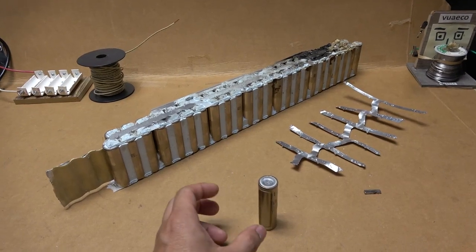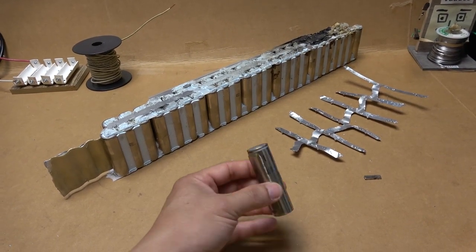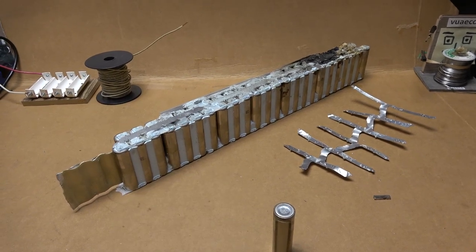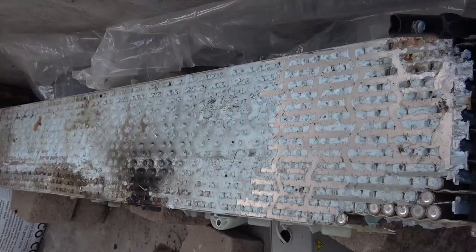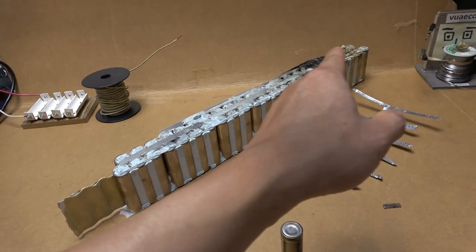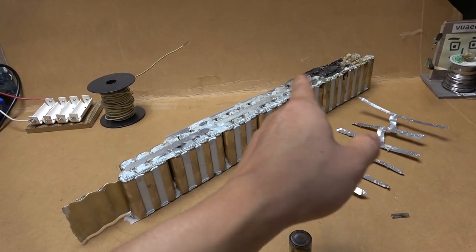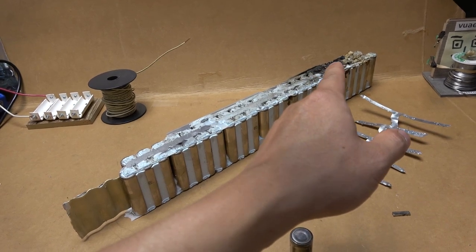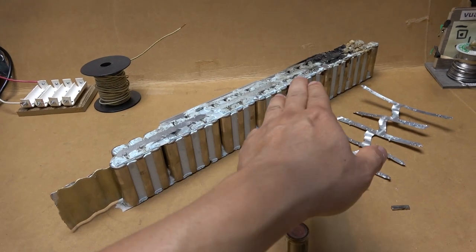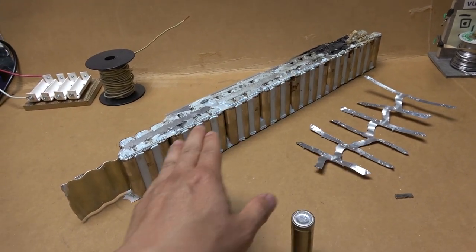I've been salvaging Tesla 2170 battery cells from a Tesla Model 3 battery module. This is the section I cut out from the bigger module. Don't mind the burned part over there—this section is shorted out and burned, but the rest of the pack is working fine.